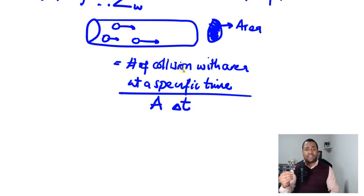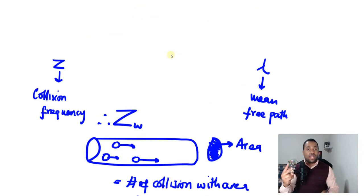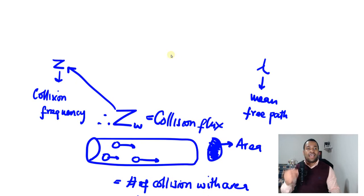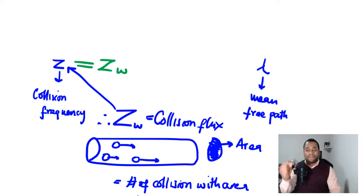We're going to look at how to derive an expression, and also how this particular expression connects to Z. The connection between the collision flux Z_W and the collision frequency Z is that the collision frequency can be determined by multiplying the collision flux by the area. With this idea in mind, we are going to prove the particular expression for our collision flux.